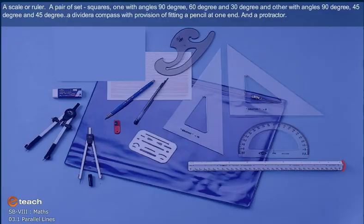A scale or ruler, a pair of set squares, one with angles 90 degree, 60 degree and 30 degree, and other with angles 90 degree, 45 degree and 45 degree. A divider, a compass with provision of fitting a pencil at one end, and a protractor.